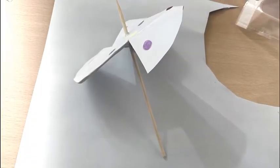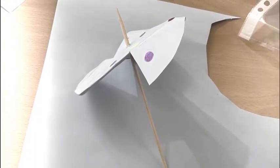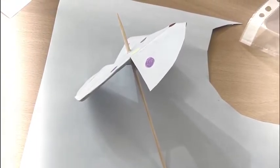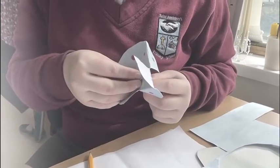Then fold some of the circular templates and hook a kebab stick in. Then fix it with blue tack.